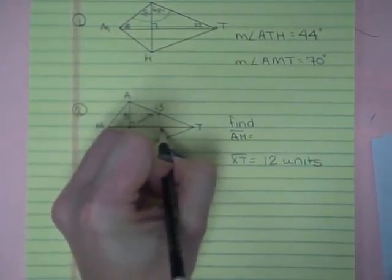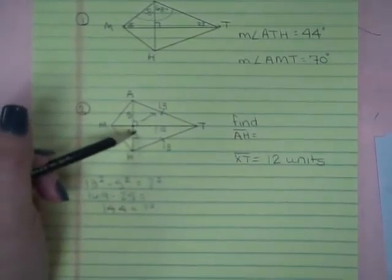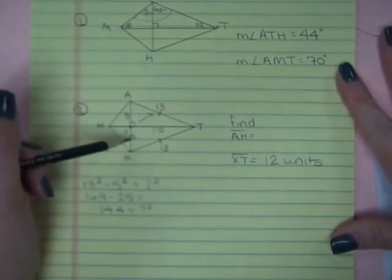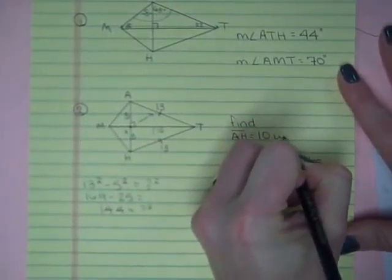Now I found that this is 12 and I could solve Pythagorean theorem again, or I can realize that I now have two matching triangles. So five and five to find A to H is just 10 units.